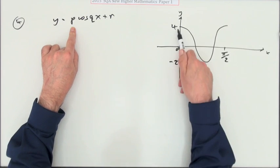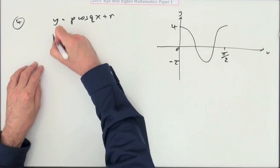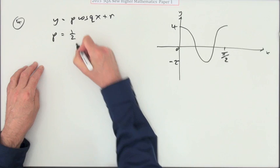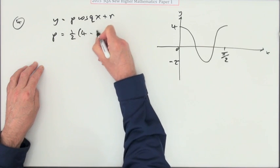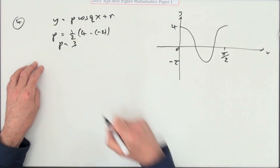Well, p would be the amplitude, which isn't 4. The difference between the top and the bottom is 6, so p is going to be a half of that difference - a half of 4 take away the negative 2, a half of 6. So p is going to be 3.